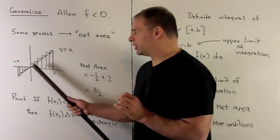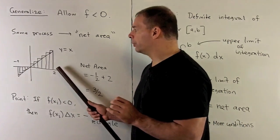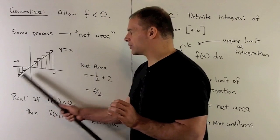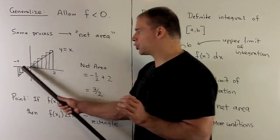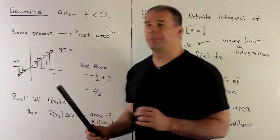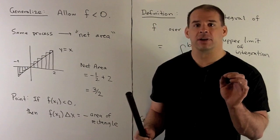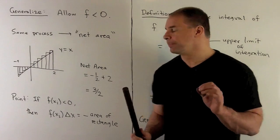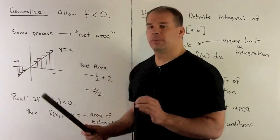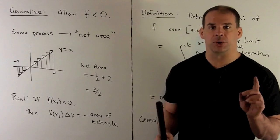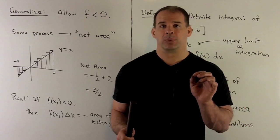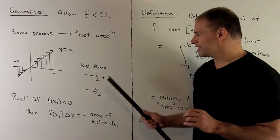For instance, we have this region going from minus one to two, bounded between f(x) = x and the x-axis — so it gives me two triangles. The area of the triangle from minus one to zero has area one-half, but it picks up a minus sign through the process, so I'll have minus one-half. Then for the area of the triangle on the positive side, its area as usual gives me two. So putting this whole thing through our area process, we get three-halves — that's the net area.